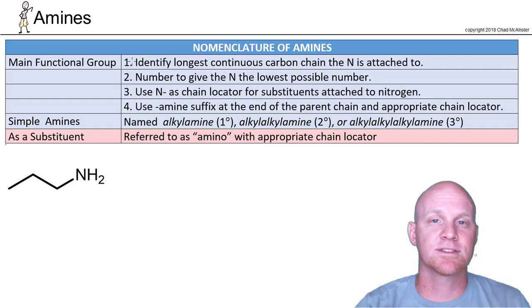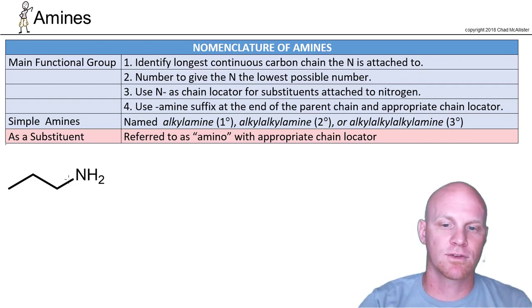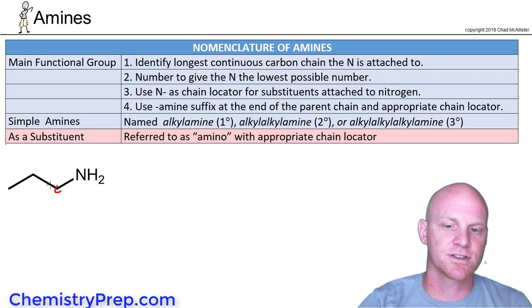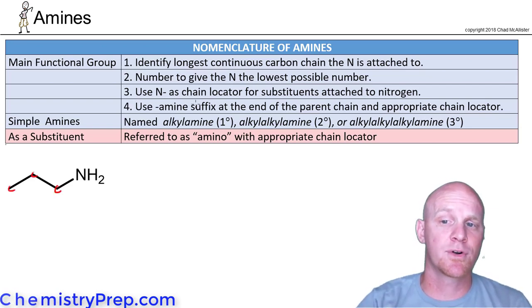First thing, you've got to realize that the nitrogen could be bonded to as many as three carbon chains. So you want to pick typically the longest, or sometimes the most complex, but usually the longest carbon chain it's bonded to. So in this case, I'm going to start off with a simple one here. And this is just bonded to a three carbon chain. And so that longest chain is going to be propane.